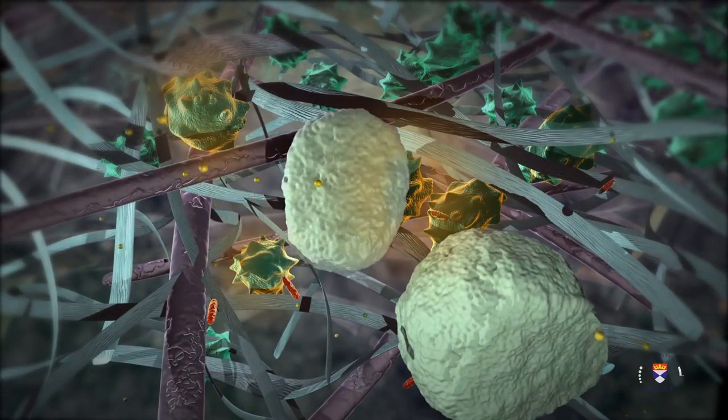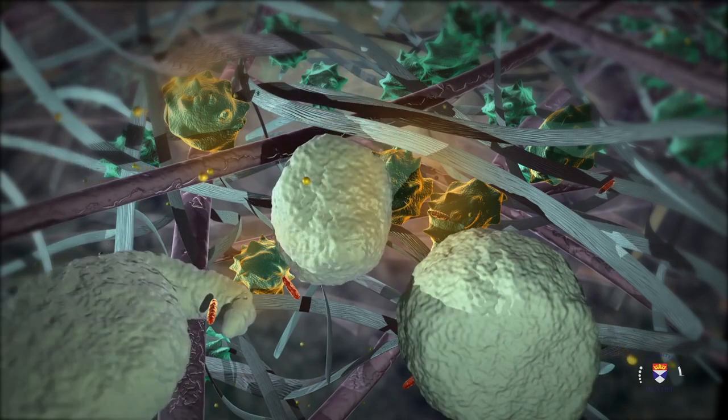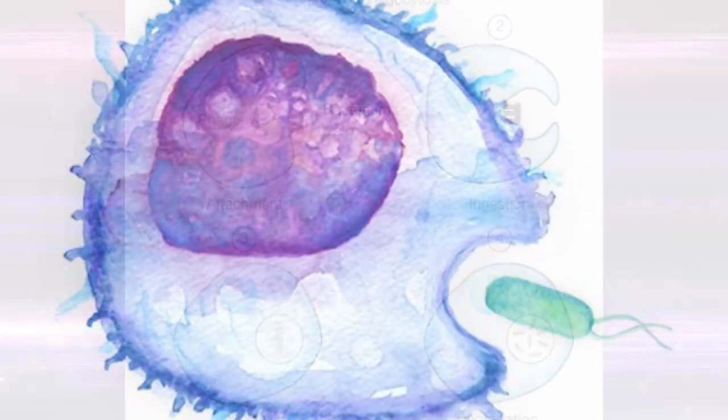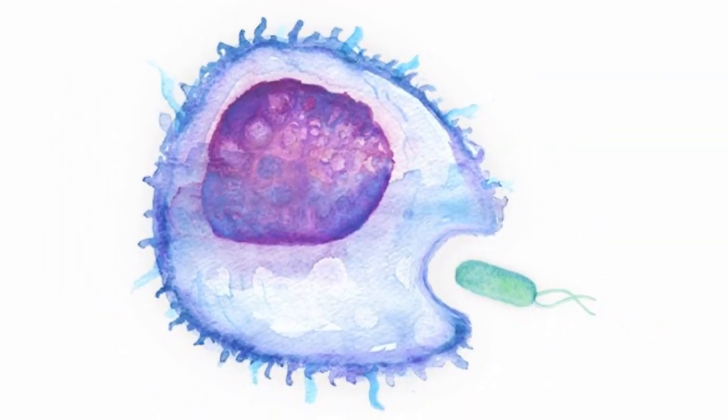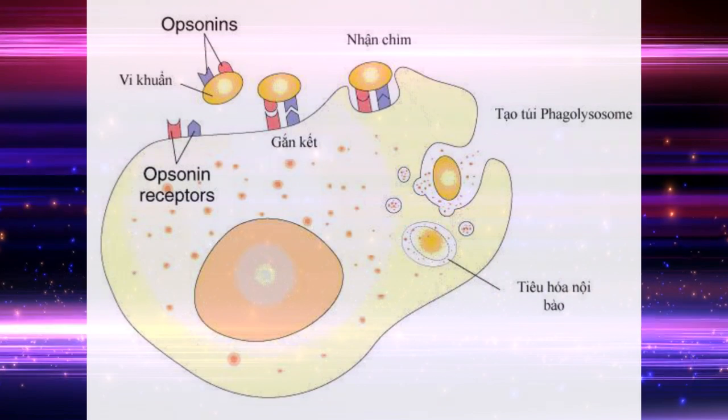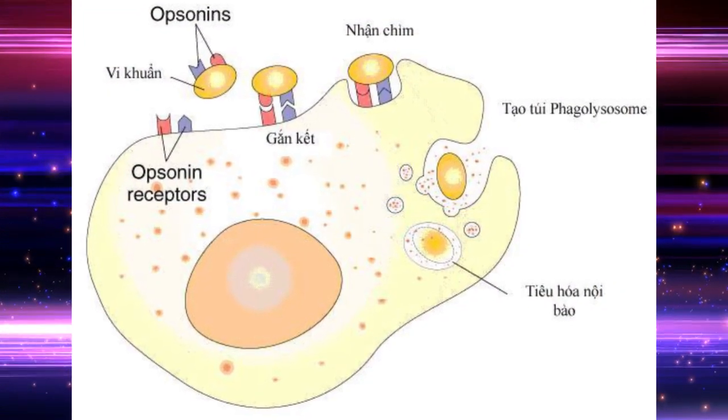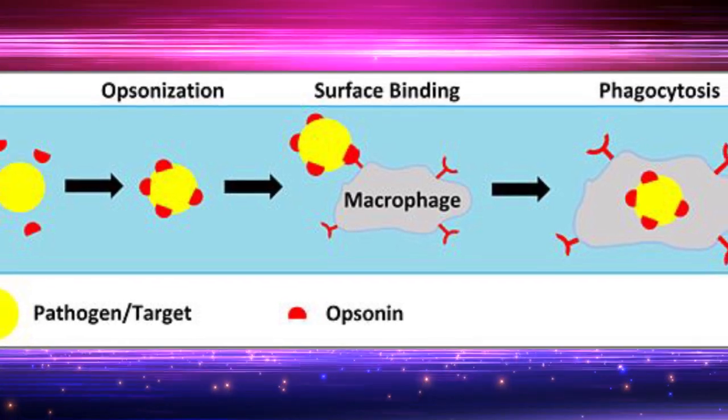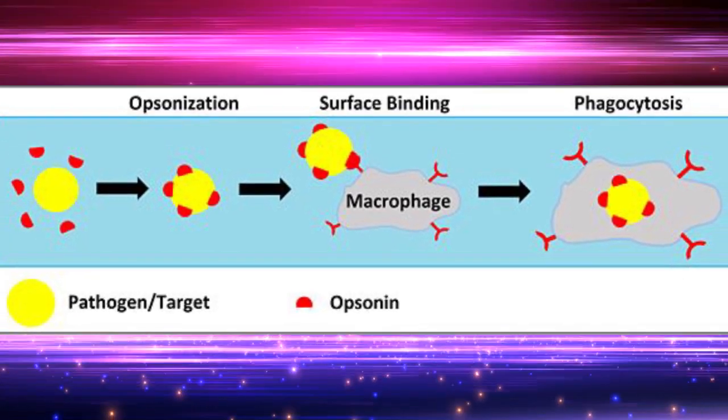Leukocytes bind and ingest most microorganisms and dead cells by means of specific surface receptors. Some of these receptors recognize components of the microbes and dead cells, and other receptors recognize host proteins called opsonins. Opsonins are antibodies or other substances which bind to foreign microorganisms or cells, making them more susceptible to phagocytosis.